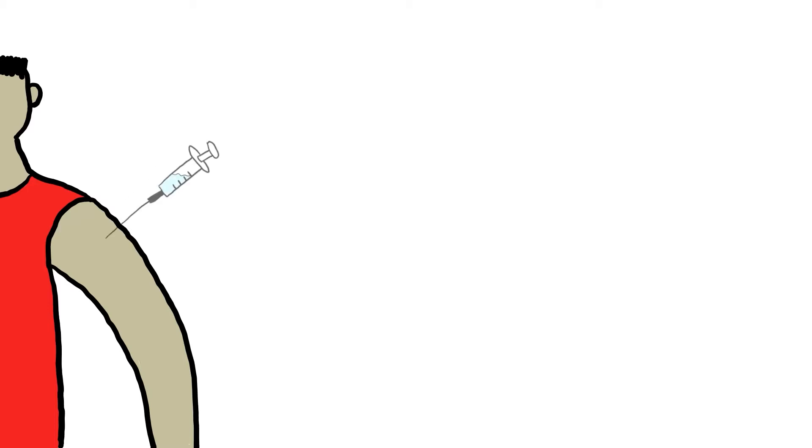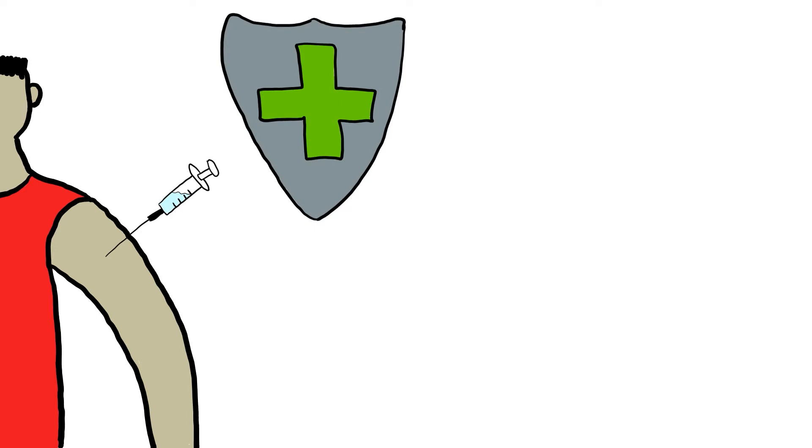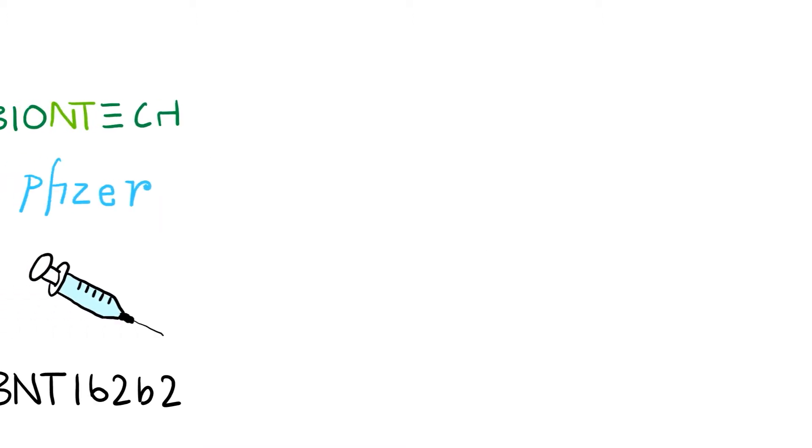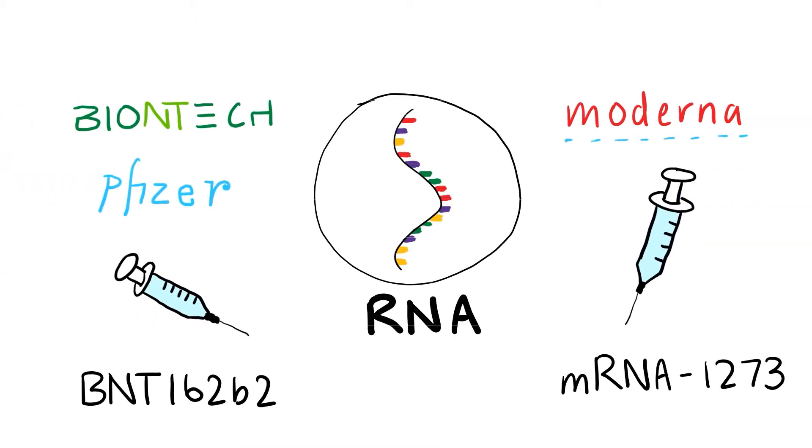Viral vaccines immunize us against infectious viral diseases by triggering a specific protective response and historically have done so by containing a weakened or inactive virus or a part of the virus called the antigen. However, the COVID-19 vaccines by BioNTech, Pfizer and Moderna contain RNA instead.